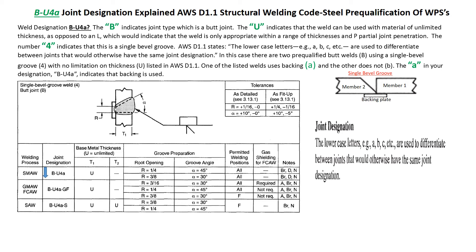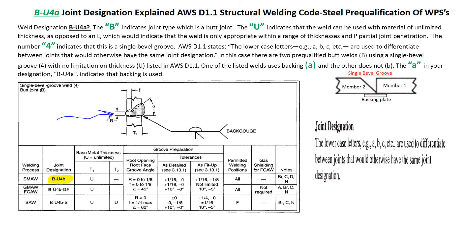This lower case letter A lets you know that this joint design would have a backing. If it had the letter B, it would have no backing. So the A indicates that you will have a backing, and the B indicates that you will not have a backing. So if you look under AWS D1.1 and you see B-U4B — lower case B — that means that joint designation does not have a backing.